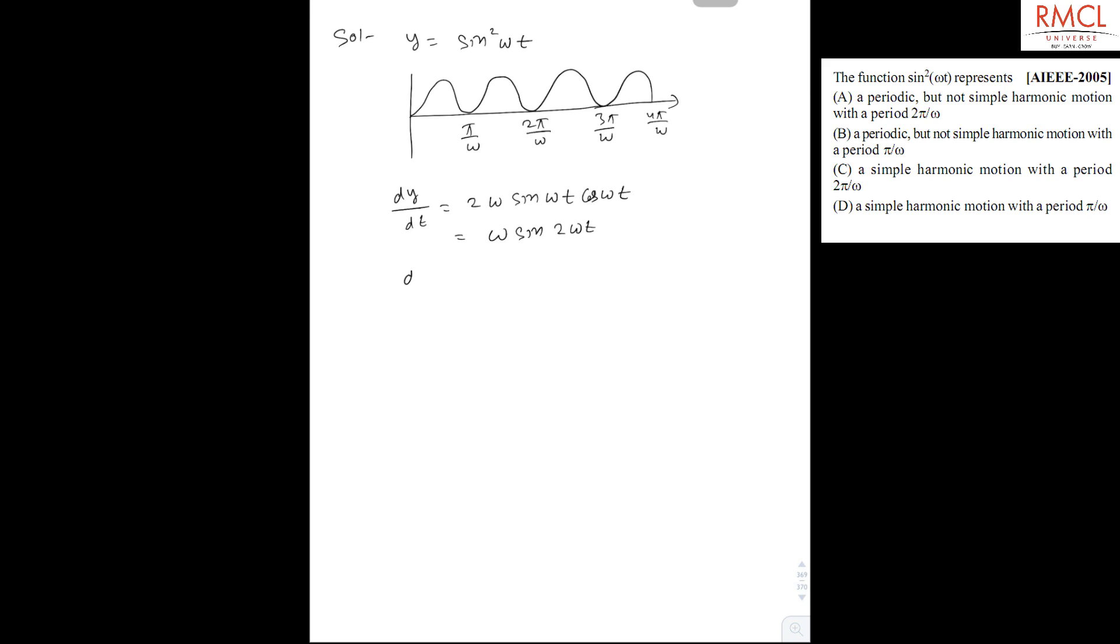And d square y, d2y upon dt square, will be equal to 2 omega square cos 2 omega t. And for SHM we know d square y upon dt square is proportional to minus y, so it is not a function of SHM.